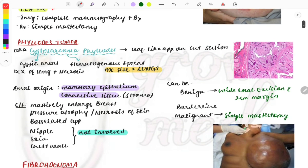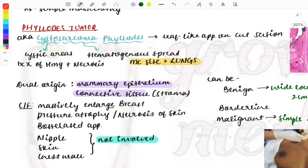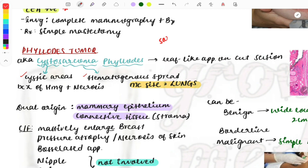Moving on to phylloides tumor, also known as cystosarcoma phylloides. Breaking down the name: 'cysto' means cystic areas on cross-section, 'sarcoma' means hematogenous spread—any tumor with sarcoma in the name has hematological spread.